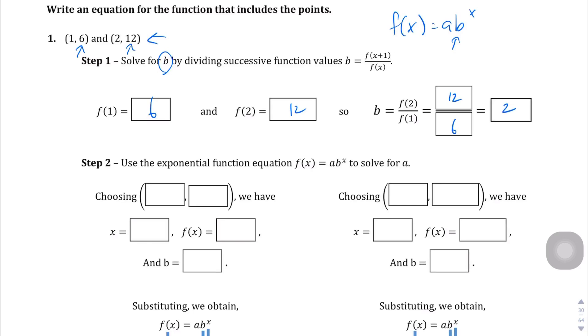And then we're going to solve for a by using this function, f of x equals a b to the x. So we're going to choose, whichever points we choose, we're going to get the same answer. And so I think that's why they have us go through this twice. So if we choose 1, 6, which is the first one up here. x equals 1, f of x equals 6. And so we need to figure out what, no sorry, we already found out what b is. b is 2. We found it out up here.